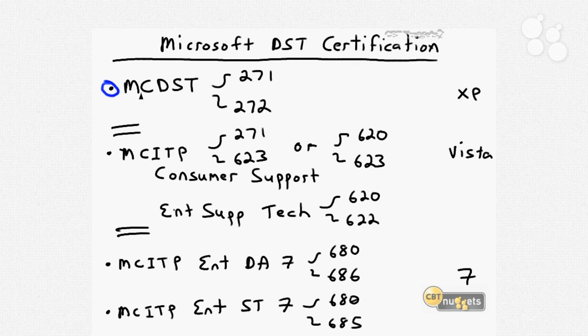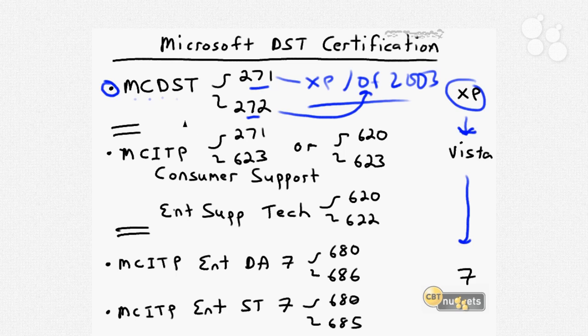You'll note here that MCDST is a legacy title. The MCDST stands for Microsoft Certified Desktop Support Technician. You have to pass two exams to earn this, 70-271 and 272. MCDST is your Windows XP and Office 2003 support credential. 271 deals almost exclusively with Windows XP support. 272 deals with managing applications, in particular Office 2003.